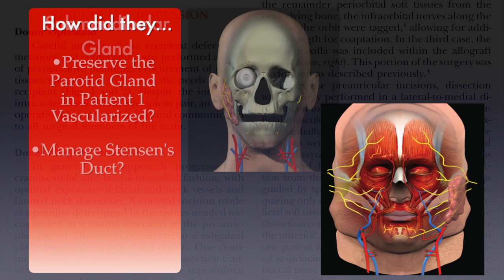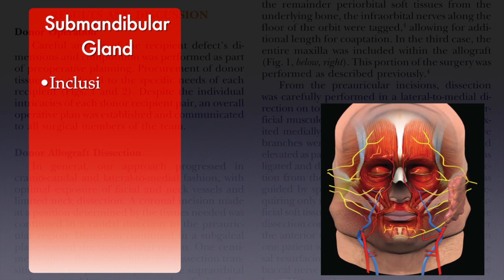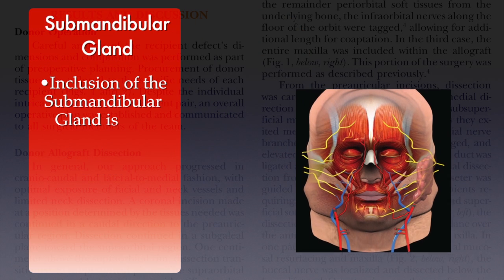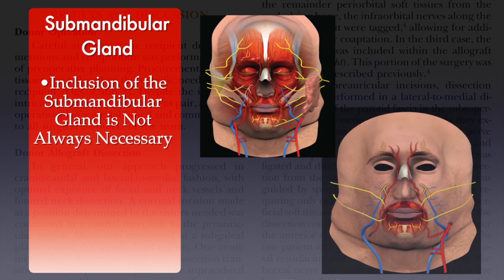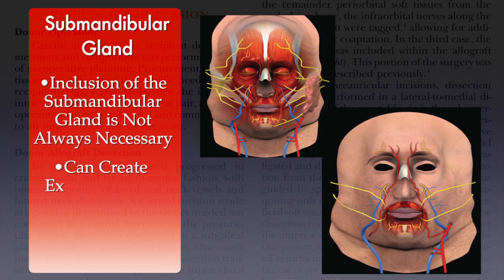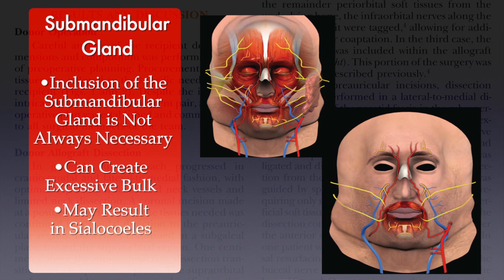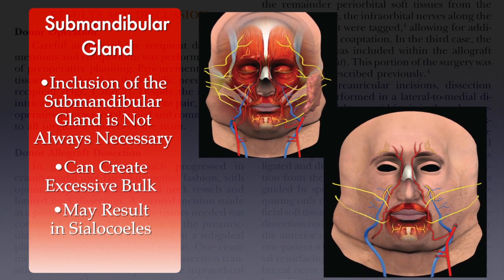I agree that the inclusion of the submandibular gland is not necessary in cases that do not need floor of mouth mucosal reconstruction, since it only creates added bulk and may result in siloceles. The authors make a recommendation of limiting the cold ischemia time to four hours based on potential time limitations of the muscle.